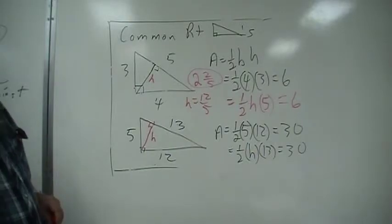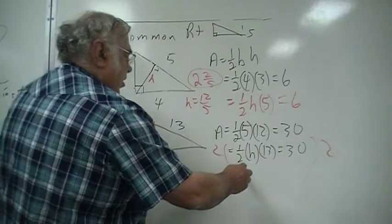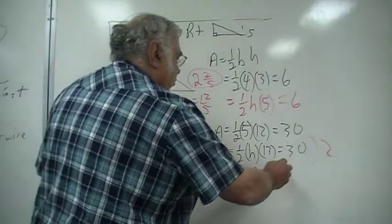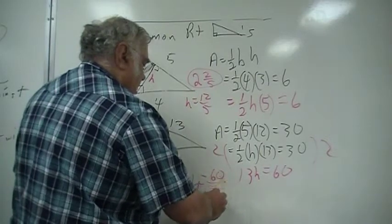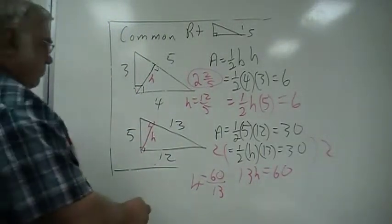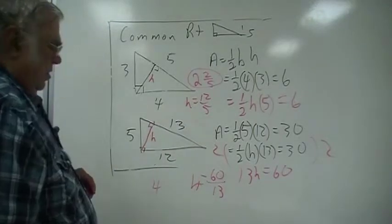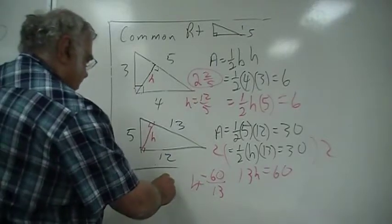Once again, if you double both sides, multiply both sides of this equation by 2, you get 13H equals 60. So H would be 60 over 13, which if you work that out, it would be 4 and 8 thirteenths.